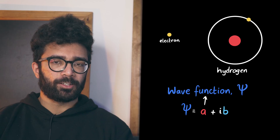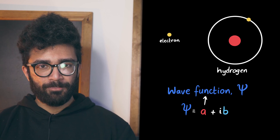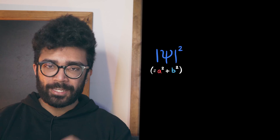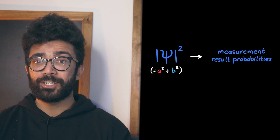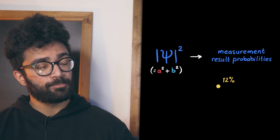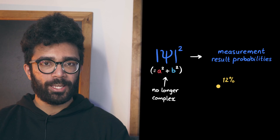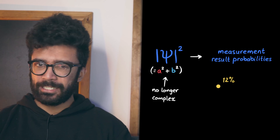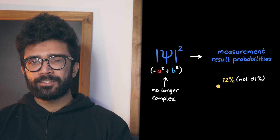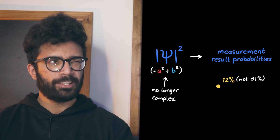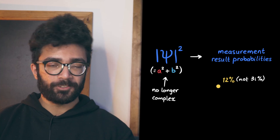The wave function is inherently a complex function, and the complexness of it is very important. When we make any measurement on the quantum system — like looking for the positions of our particles — what we directly measure is something to do with the wave function squared, technically the square modulus. This is because the square modulus is directly related to the probability of getting a certain measurement result. When we find the square modulus, the complexness actually goes away and we're left with a real number, which makes sense because probability needs to be a real number.